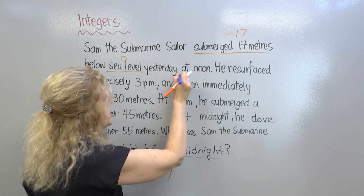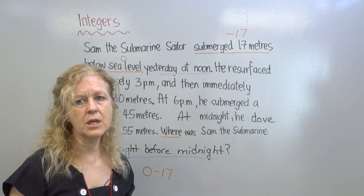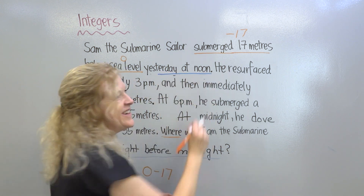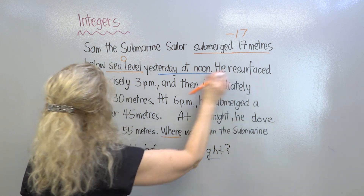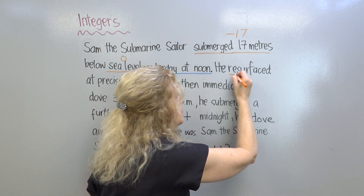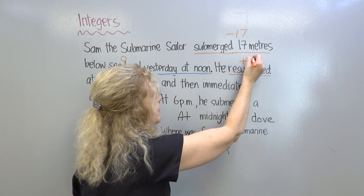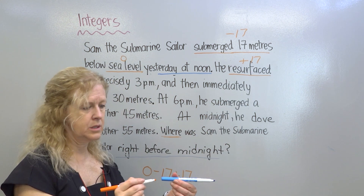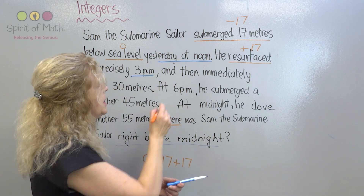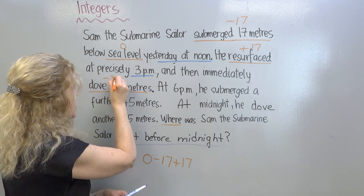Yesterday at noon — that is a timing, so I'll underline that in blue. Now he resurfaced at precisely 3 p.m. Resurfaced means he came back up, so he went down 17 and came back up to the surface, which means he would have come up 17 to resurface and return to zero. At precisely 3 p.m. is the timing. And then immediately dove 30 meters — if he dove 30 meters, that means he went down 30, so that's minus 30.